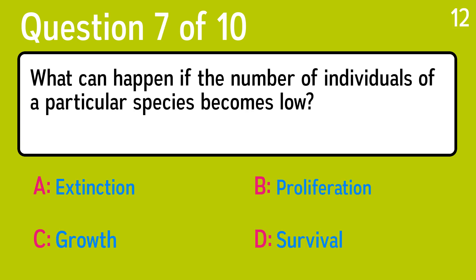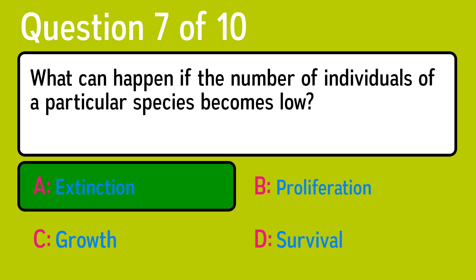Question 7, what can happen if the number of individuals of a particular species becomes low? The correct answer is A, extinction.